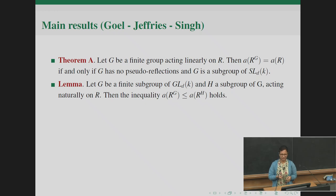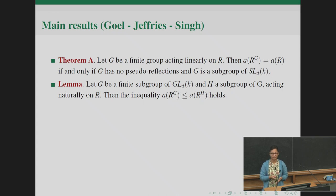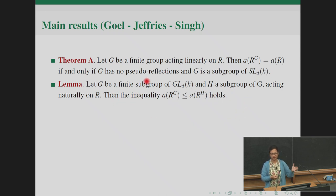The main consequence is: given a finite group acting linearly on a polynomial ring, the a-invariant of the invariant ring equals the a-invariant of the ring if and only if G has no pseudo-reflections and is a subgroup of the special linear group. An interesting lemma required for the proof concerns subgroups: if H is any subgroup of G, then the a-invariant of R^H is always greater than or equal to the a-invariant of R^G. This was previously known only in a specific case from Jack Jeffries' thesis, but we proved it in full generality.